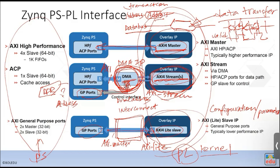Streaming is efficient but use it with caution — it must be consecutive access. In summary: for data transfer, use AXI Master (with base address) or AXI Stream (base address programmed in DMA). For host to program the kernel function, use AXI Lite via the GP port.